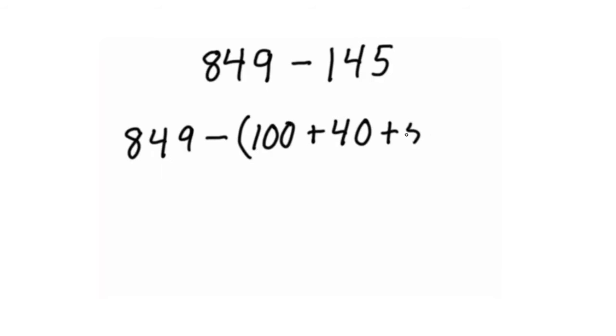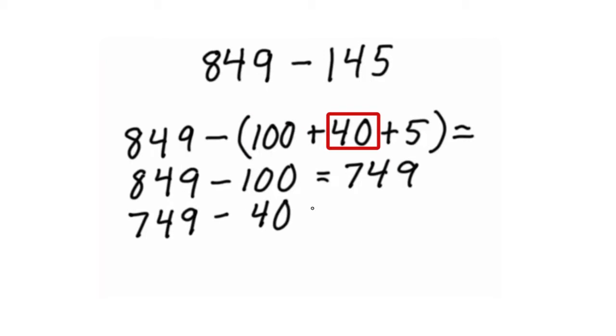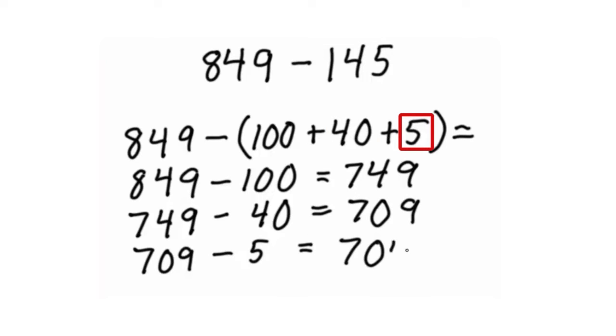In a subtraction problem, 849 minus 145, we'll do 849 minus 100 plus 40 plus 5. Then subtract the hundreds: 849 minus 100 equals 749. Then subtract the tens: 749 minus 40 equals 709. Then subtract the units: 709 minus 5 equals 704.